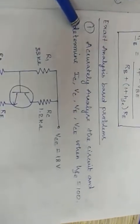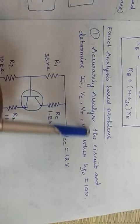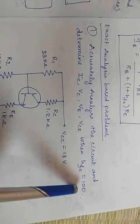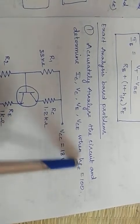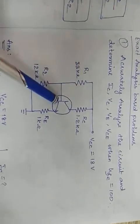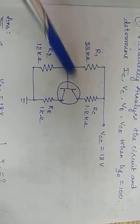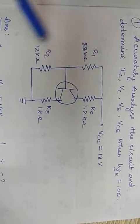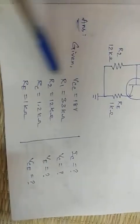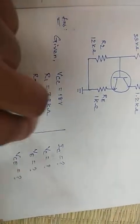Now the exact analysis problem: accurately analyze the circuit and determine IC, VC, VE, and VCE when HFE = 100. The circuit diagram is the same type as before. For exact analysis, R1 and R2 are taken as parallel. These are the given values, and those are the parameters we need to calculate.